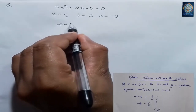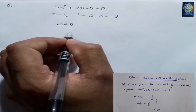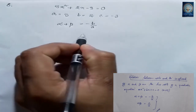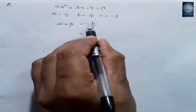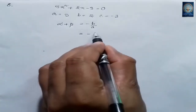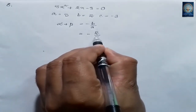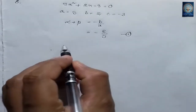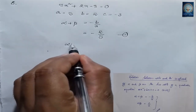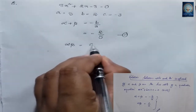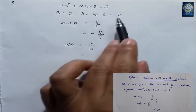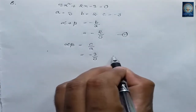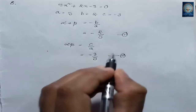Alpha plus beta is equal to -b/a. Substituting: b is 2, a is 5, so alpha + beta = -2/5. This is equation number 1. Alpha times beta equals c/a; c is -3 and a is 5, so alpha × beta = -3/5. This is equation number 2.